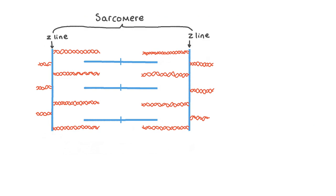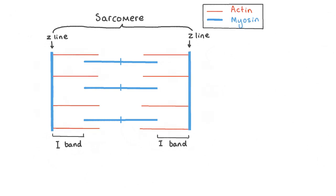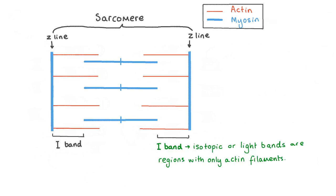The I band is also known as the isotropic band. This word means optically clear and regular because it's made of straight thin filaments of actin only. As they only contain thin actin filaments, the I bands appear considerably lighter than the rest of the sarcomere, which is why they're sometimes called the light bands. Within the I band is a line that marks the end of the sarcomere called the Z line, named for the German word 'Zwischen' meaning 'between.' The Z line always appears slightly darker in micrograph images, as it actually consists of a high concentration of zigzagging actin filaments and other proteins. Remember that each two adjacent Z lines mark the boundaries of one sarcomere.